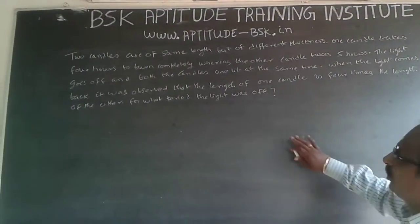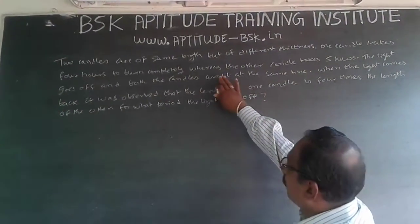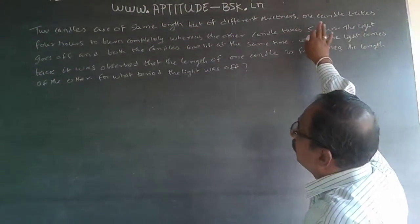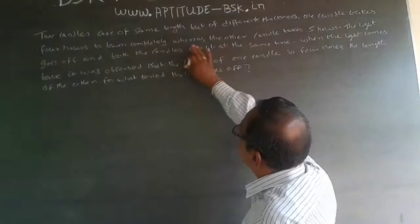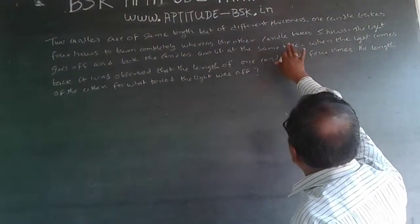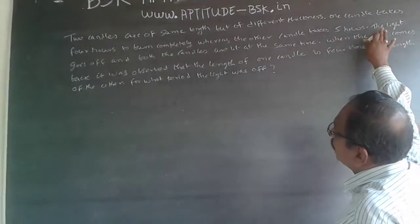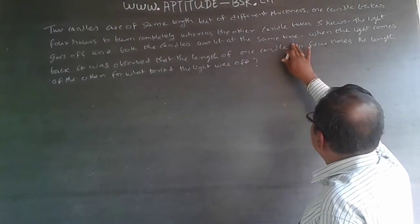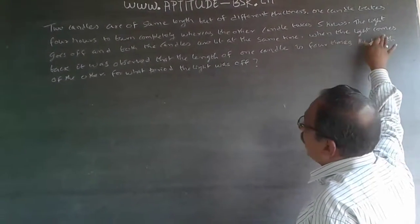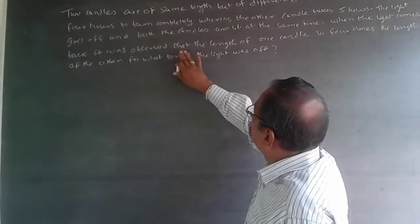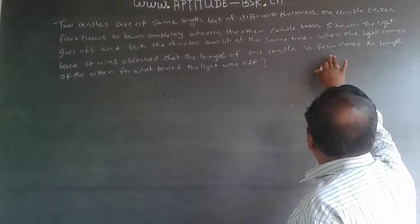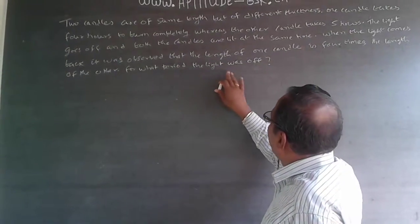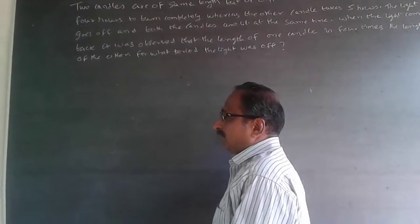The question is: two candles are of the same length but of different thickness. One candle burns in four hours, whereas the other candle takes five hours. The light goes off when both candles are lit at the same time. When the light comes back, the length of one candle is four times the length of the other. For what period was the light off?